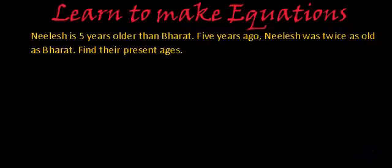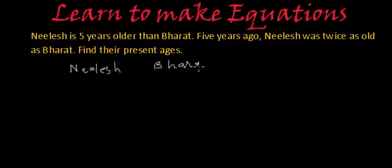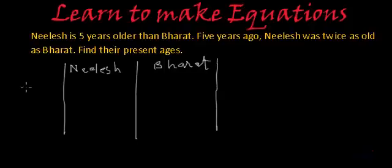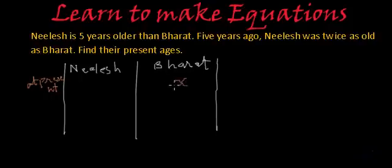One method is using one variable, and in another method we are going to solve it using two variables. So first, using one variable, I'll make a table with their names. We have two people: Nilesh and Bharat. We will assume their present age. Since Bharat is younger, I'm going to assume Bharat's age as X. And since Nilesh is five years older than Bharat, Nilesh's age will be X plus 5.